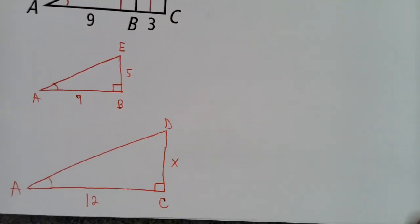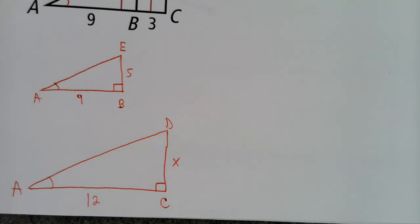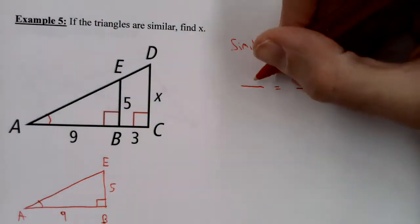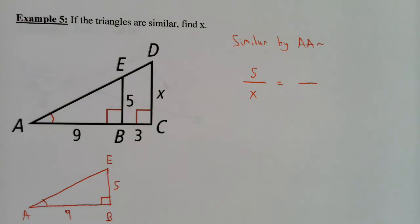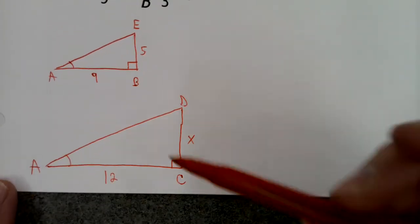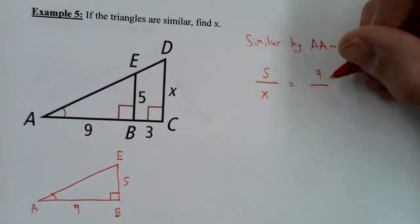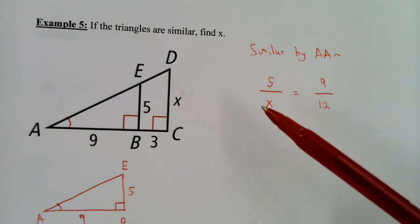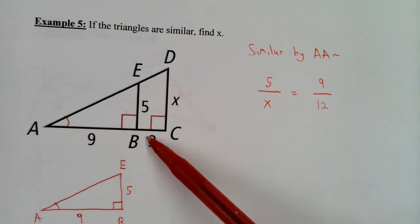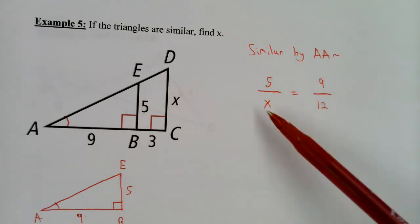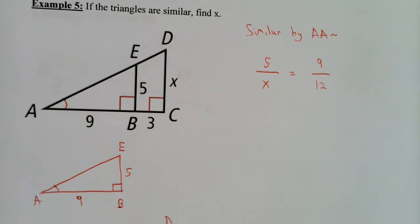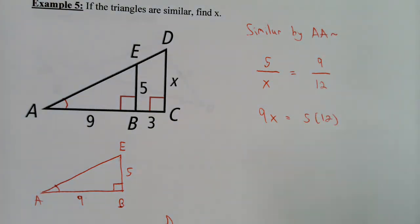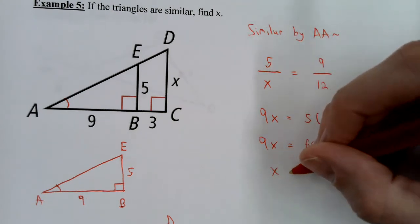Set up the proportion: make all numerators come from one triangle and all denominators from the other. So 5 over X equals 9 over 12. Without separating the triangles, people often mistakenly write 9 over 3. Cross multiply: 9 times X equals 5 times 12, so 9X equals 60, and X is approximately 6.67.